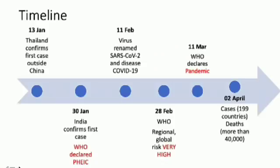India confirmed its first case on 30th January in students who had a reported history of travel from Wuhan. On the same day, WHO declared it as a public health emergency of international concern to facilitate sharing of data around COVID-19 between countries and to facilitate vaccine and medicine development. On the 11th of February, this virus was renamed as SARS-CoV-2 and the disease as COVID-19. By 11th of March, all continents in the world were affected and WHO declared it a pandemic.